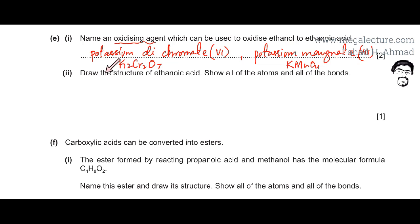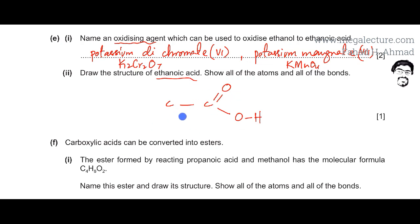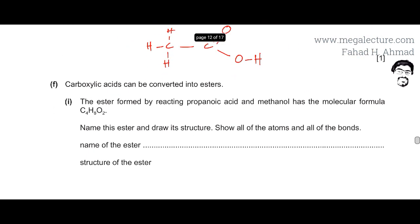The next part asks you to draw the structure of ethanoic acid showing all the atoms and all the bonds. Be very careful — you must show all atoms and all bonds. Ethanoic acid has two carbon atoms. Since it's a carboxylic acid, there's a double bond O and OH functional group present. To complete the bonds, three hydrogens are bonded to the other carbon atom.